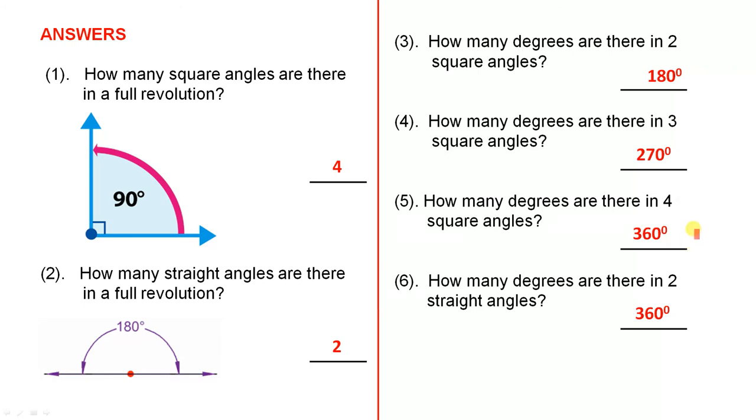And how many degrees are there in four square angles? 90 plus 90 plus 90 plus 90 is 360. And how many degrees are there in two straight angles? Well, if one straight angle is 180, therefore two straight angles must be 360.